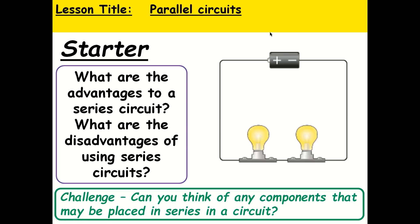Last lesson, we saw what happens to current and voltage in a series circuit, and we also discussed resistance in a series circuit. In today's lesson, we're going to look at what happens to current in a parallel circuit, what happens to potential difference or voltage in a parallel circuit, and we'll discuss resistance as well, and do some calculations. As a starter, what are the advantages and disadvantages of a series circuit?